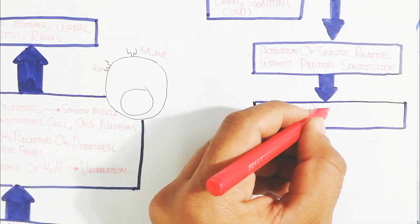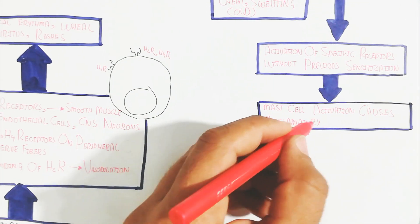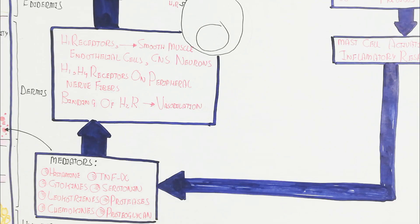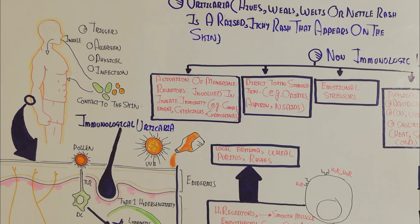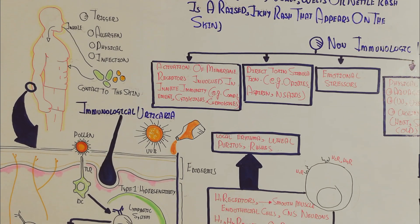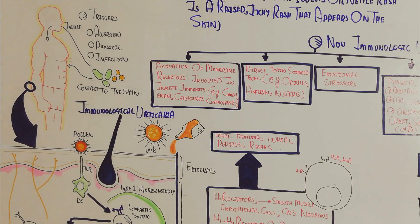Because of aquagenic, light, cholinergic, heat, sweating, and cold, it will lead to mast cell activation causing inflammatory response. This inflammatory response is basically the same mediators. I hope you understand about urticaria.